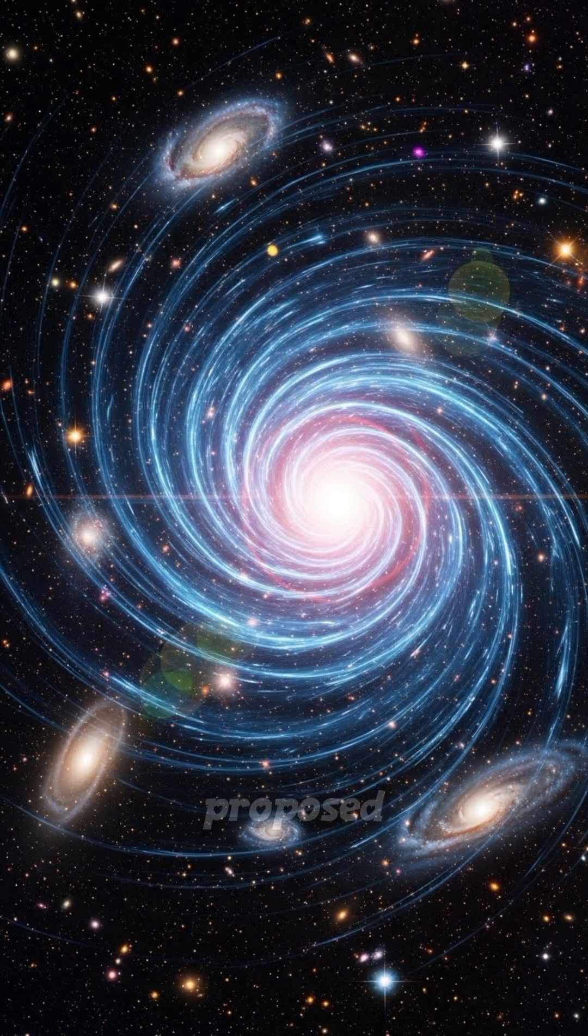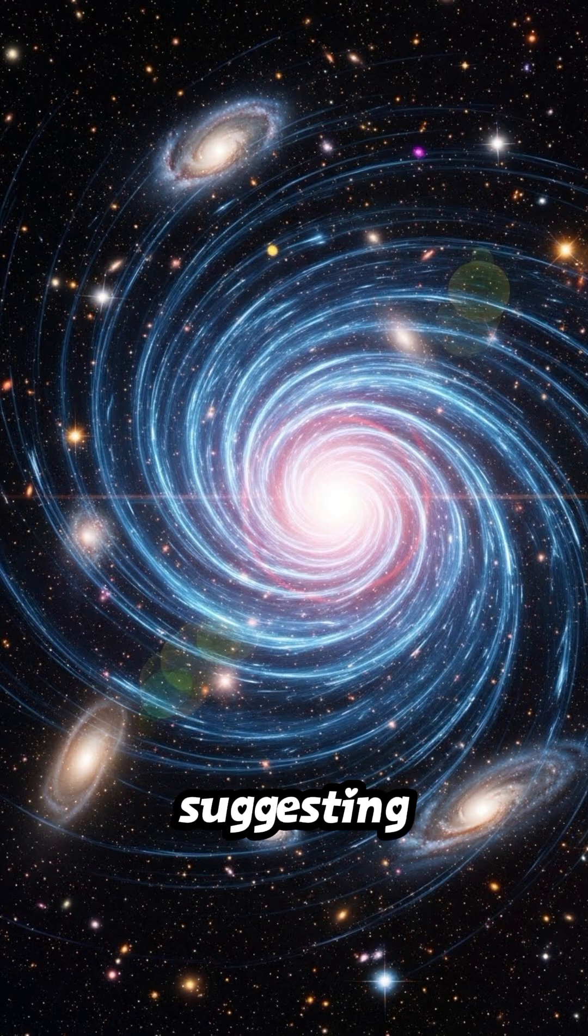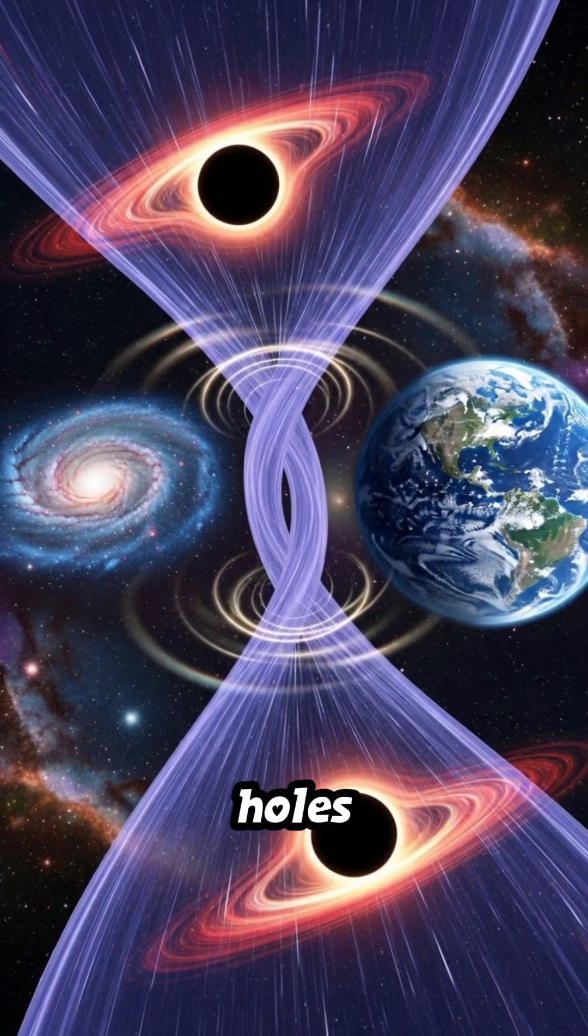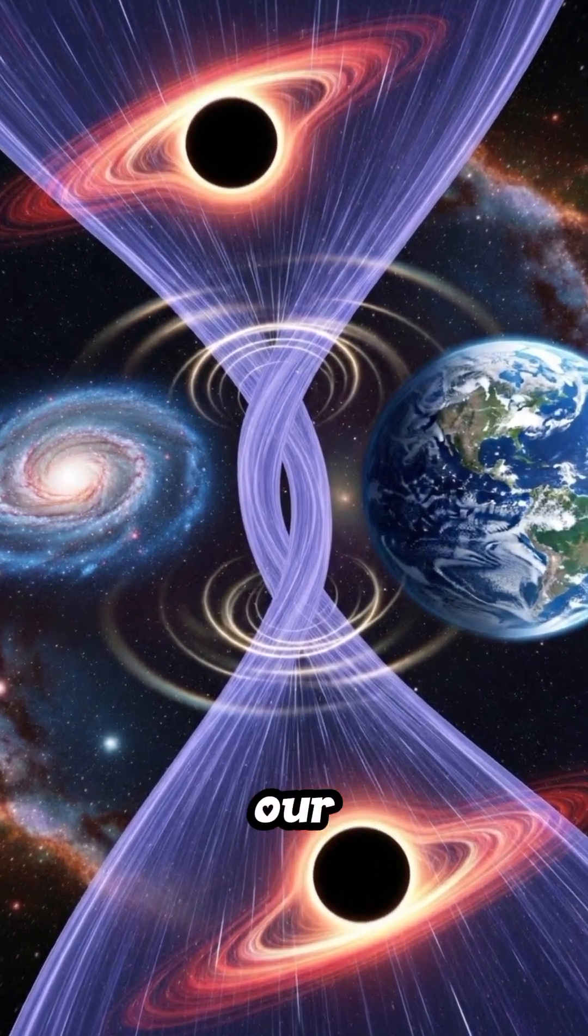Einstein and Rosen first proposed these bridges in 1935, suggesting that black holes might link to white holes, creating shortcuts that defy our understanding of distance.